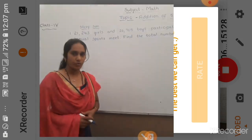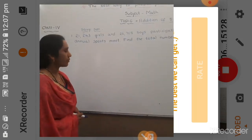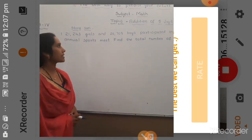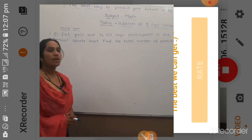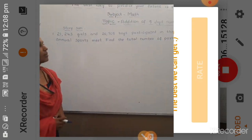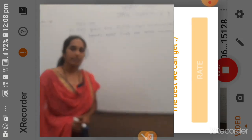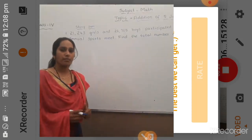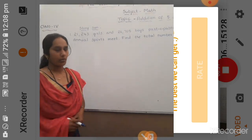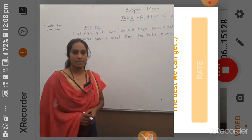First I will read the story. That is 21,243 girls and 26,705 boys participated in the annual sports meet. Find the total number of participants. Children, here they give the number of girls and the number of boys separately, so we have to find the total number of participants.